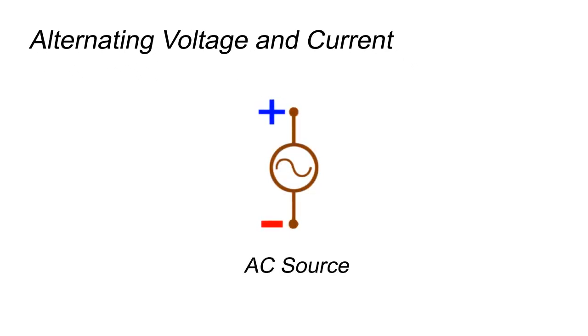Alternating Voltage and Current. When available voltage from an electrical source changes its direction periodically, the voltage is known as alternating voltage and the source from which it is available is known as AC source.